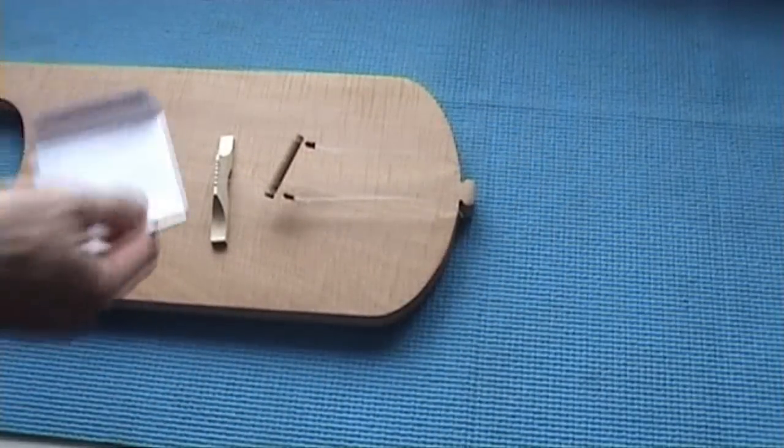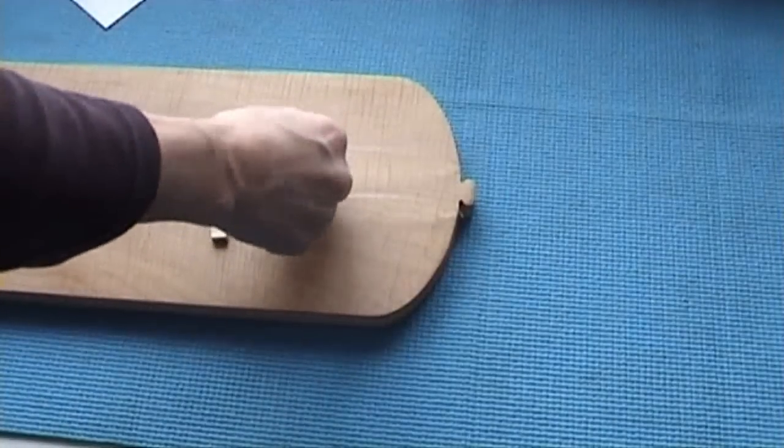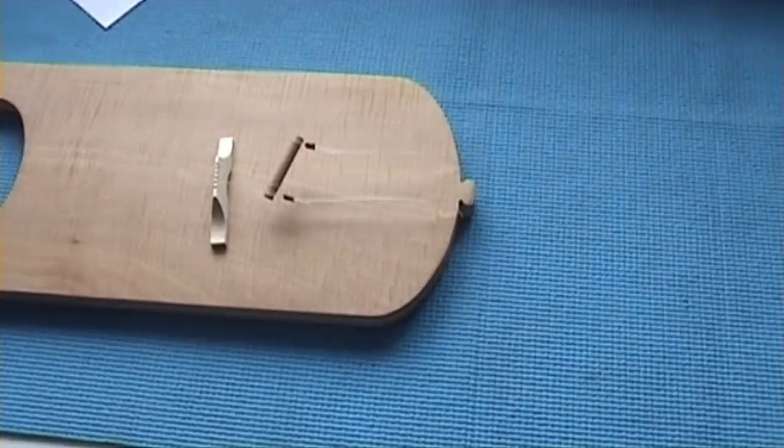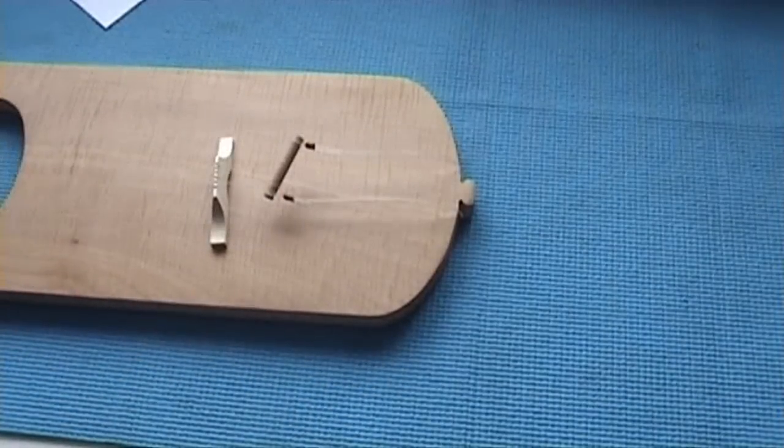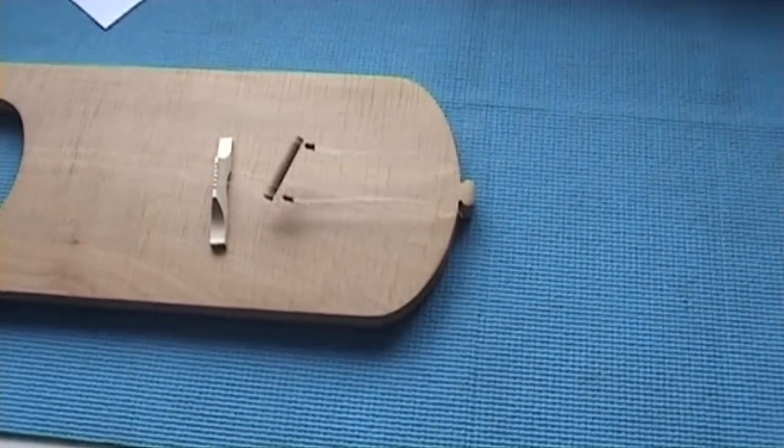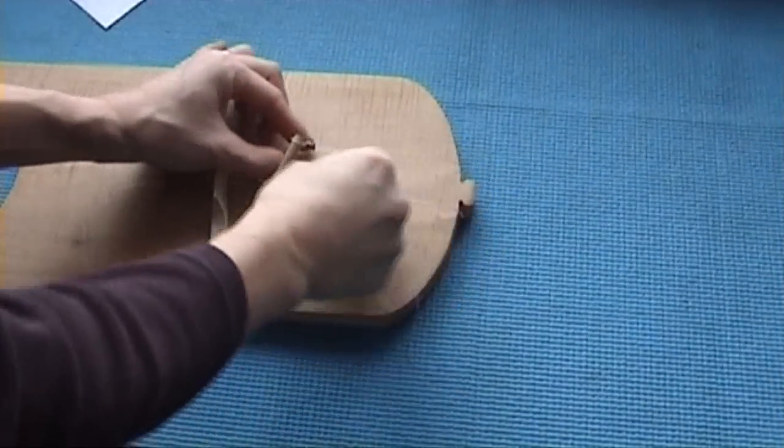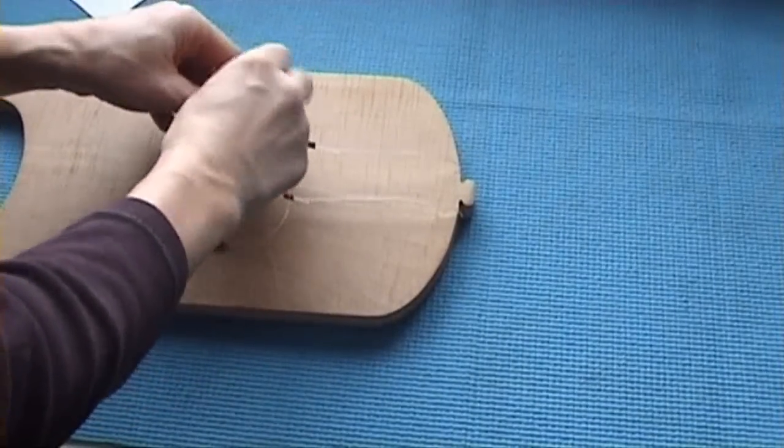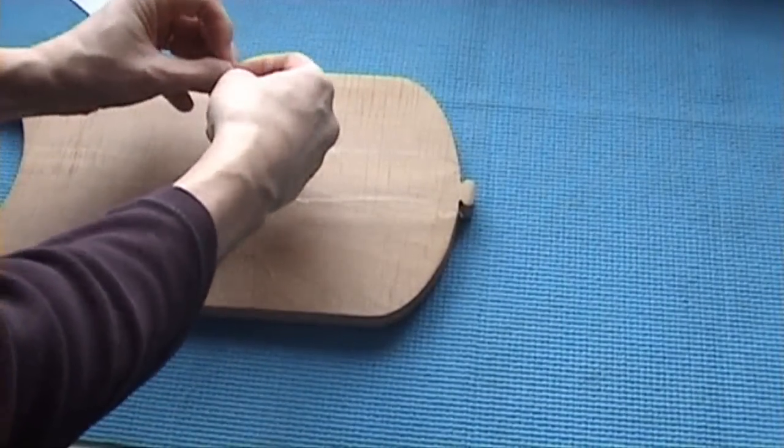So what we now do is put on the highest string, which is the one on the far right-hand side, and we pull this string on to bring the tailpiece equally under tension. So again, we go under the tail and tie a knot, a figure of eight in this example.